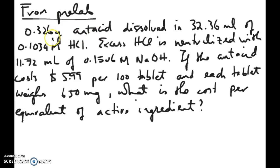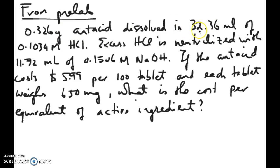Let's say you measure out 0.326 grams of antacid. You dissolve it in a certain amount of HCl and you record the volume and the concentration of the HCl. Remember that the whole point of this experiment is you add way too much HCl to the antacid so it will completely neutralize the antacid.